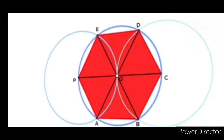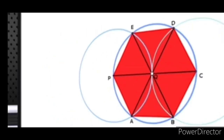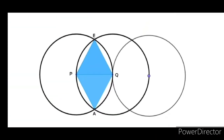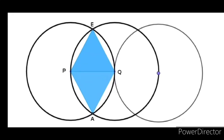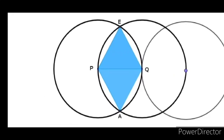We are going to use these triangles. In this triangle we will use PQE and APQ. This is an equilateral triangle — we have already seen it. Because the triangle has its center at the top, it is an equilateral triangle.